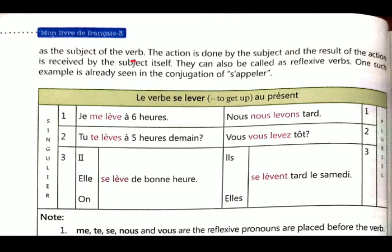Means the same — the subject and the pronoun. Pronominal verbs are verbs that are related to the subject where the action is done by the subject and the result of the action is received by the subject itself. Now read this line again: the action is done by the subject and the result of the action is received by the subject itself.